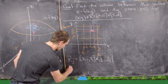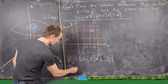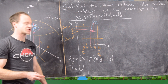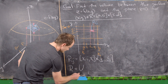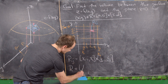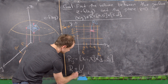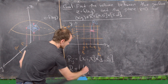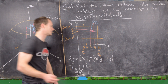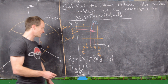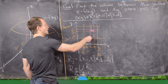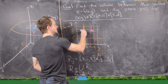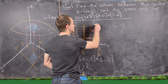Our entire rectangle R is the disjoint union, as i goes from 1 to n and j goes from 1 to m, of all the sub-rectangles R_{ij}. So we're taking the union of these smaller rectangles as we go up and across to cover the bigger rectangle.